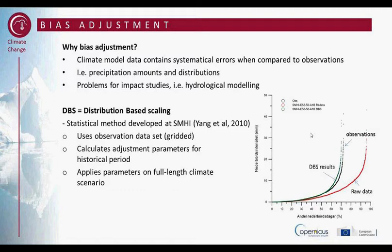So what we are using in the project is a method called DBS, distribution-based scaling, and that is developed here at SMHI by Young. This method uses an observation dataset which is gridded, and calculates adjustment parameters for a historical period using both the observations and the climate scenario data, and then applies the parameters on the full length climate scenario.